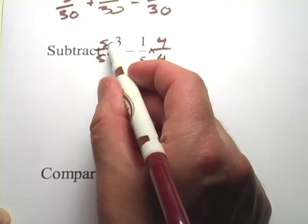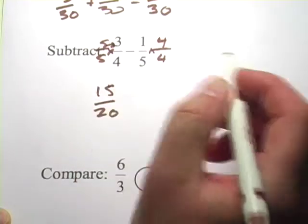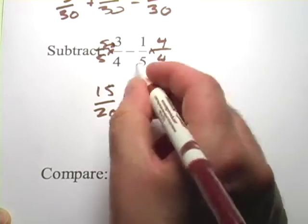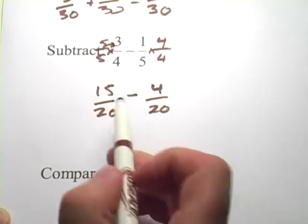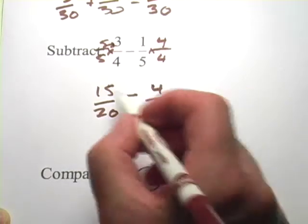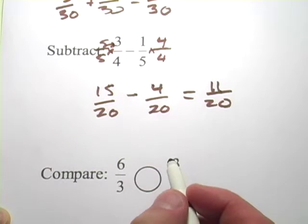Let's try this. We'll multiply across the top here. 5 times 3 is 15, 5 times 4 is 20. Here we have 1 times 4 is 4, and 5 times 4 is 20. So this becomes 15 twentieths minus 4 twentieths. Well, 15 minus 4 is 11, and we put that over the common denominator, and we have 11 twentieths.